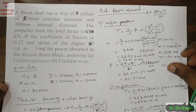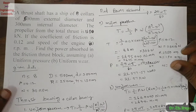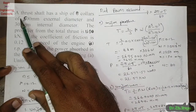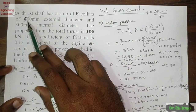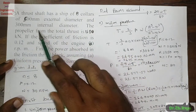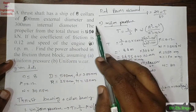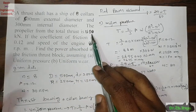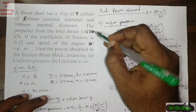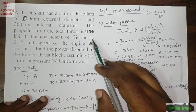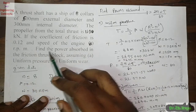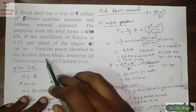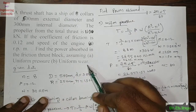In this session I want to explain a solved problem on bearings. A thrust shaft has a ship of eight collars of 500 mm external diameter and 300 mm internal diameter. The propeller total thrust is 110 kN. If the coefficient of friction is 0.12 and the speed of the engine is 80 rpm, find the power absorbed in the friction thrust block assuming uniform pressure and uniform wear.